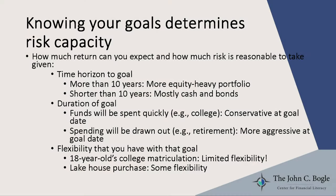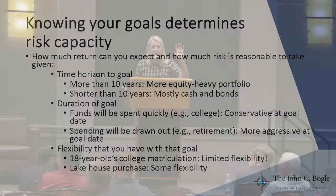Knowing your goals determines your risk capacity. When you're thinking about your goals, you want to think about your proximity to that goal as a key point. When will you need these funds? If you are 35 and planning to retire at 60 or 65 or even later, you have a very long time horizon. You have a high risk capacity — you can absorb changes in your portfolio's value because you don't need the funds imminently. So use what we know about asset class returns over various time horizons to inform how you invest, given your proximity to the goal.